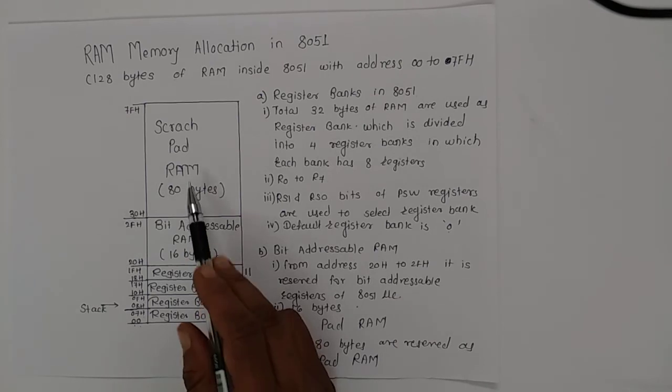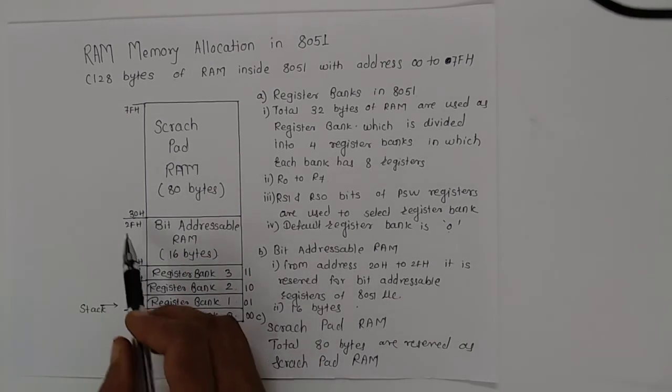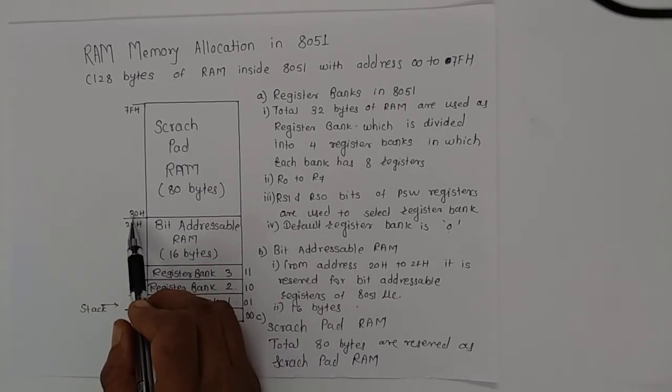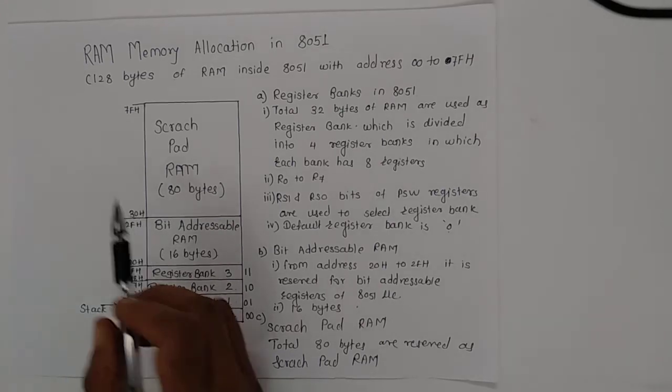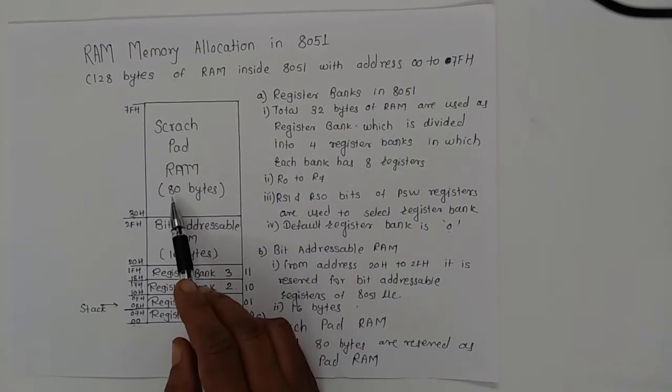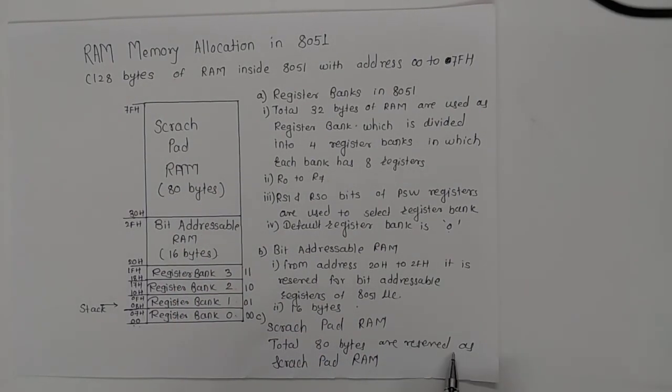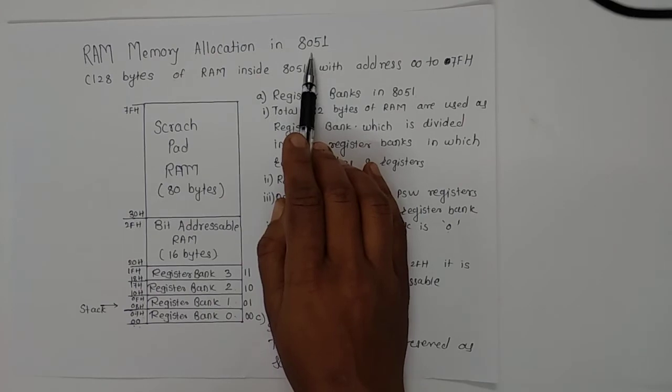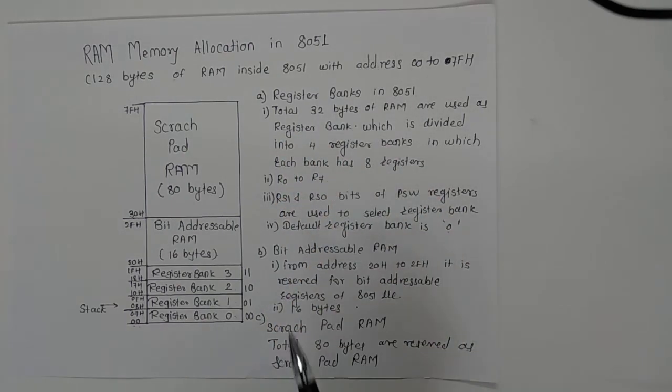The third part is scratchpad RAM, which has addresses from 30H to 7FH. So total 80 bytes are reserved as scratchpad RAM. This is about the RAM allocation in 8051 microcontroller.